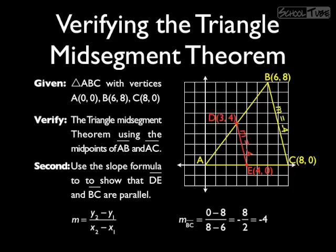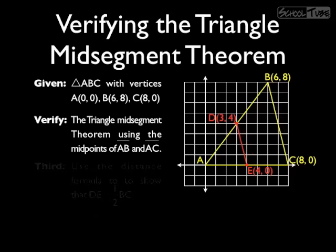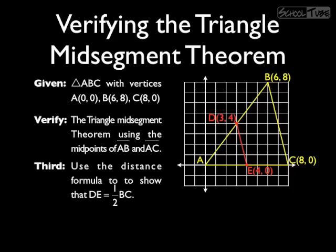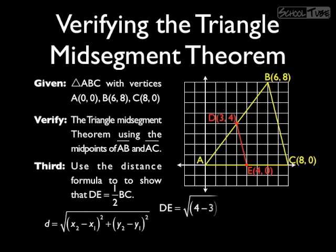Our third step is to use the distance formula to show that segment DE is half as long as segment BC. Now the distance formula is a little bit more complex, so let's go through it here. For segment DE, we use our x-coordinates and subtract them, 4 - 3. Our y-coordinates and subtract them, 0 - 4. We'll square both of those differences and take the square root, and that gives us the square root of 17.